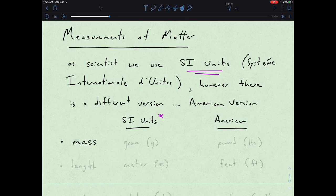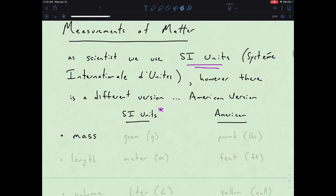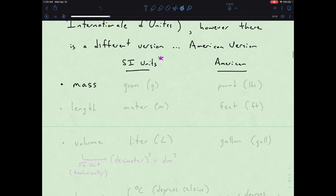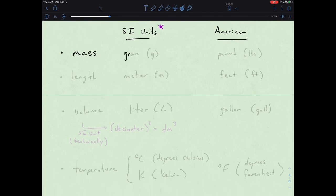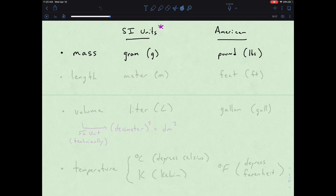Mass would be a great way to quantify matter — basically how much it weighs. In terms of SI units, we look to the gram. In terms of American, we tend to use pounds or LBS. There are 454.5 grams within a pound, so that's a way to go between those two different units. But as scientists, we go with the SI.